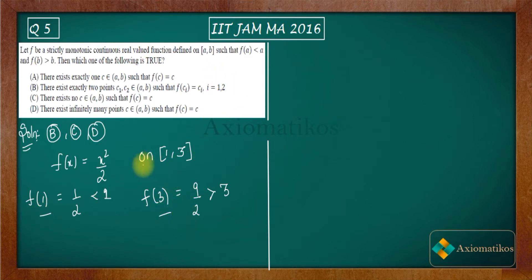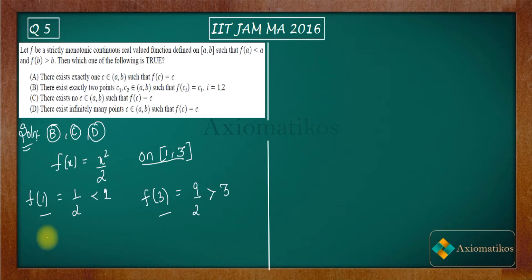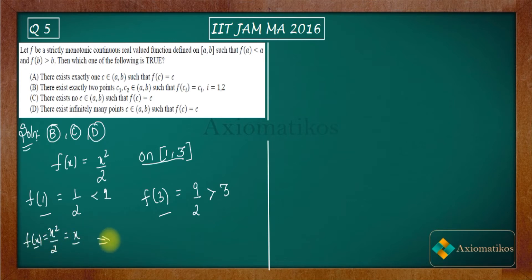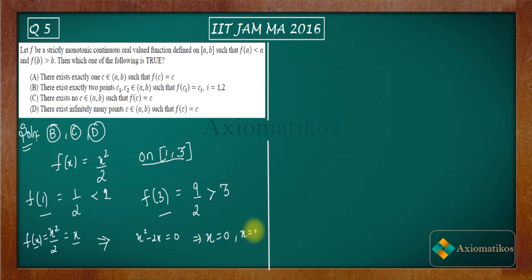Now, what about the fixed points of this function? We need to solve x²/2 = x, meaning f(x) = x. This gives x² - 2x = 0, so x = 0 or x = 2.